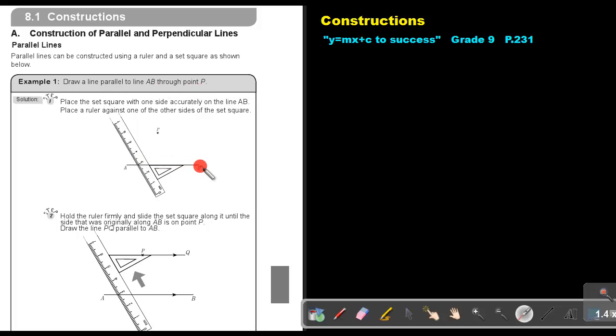There is AB, there is point B. Place the set square with one side accurately on line AB. So, there is the set square, put that side accurately on AB. Place a ruler against one of the other sides of the set square. So put it there.